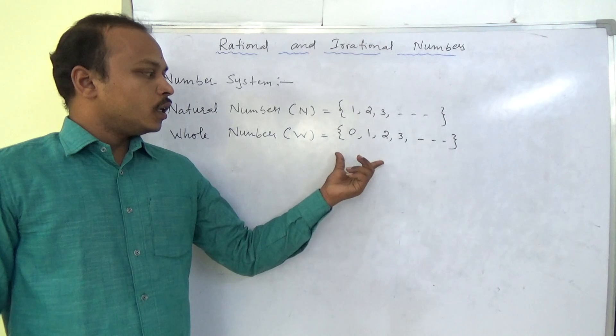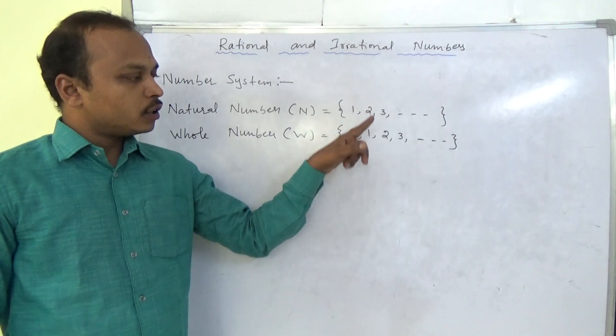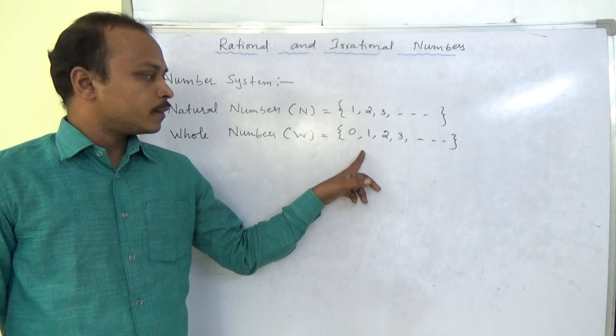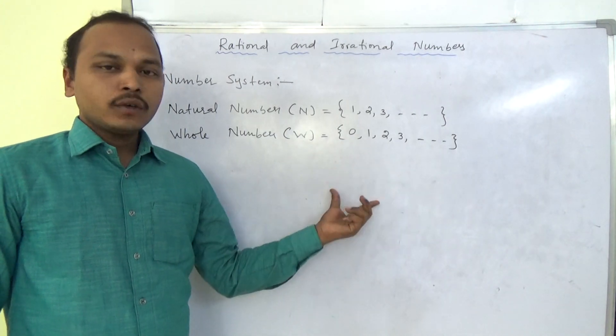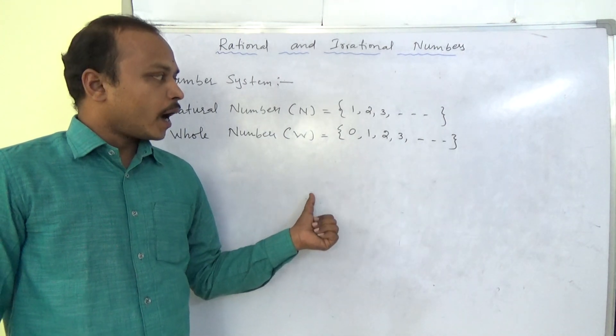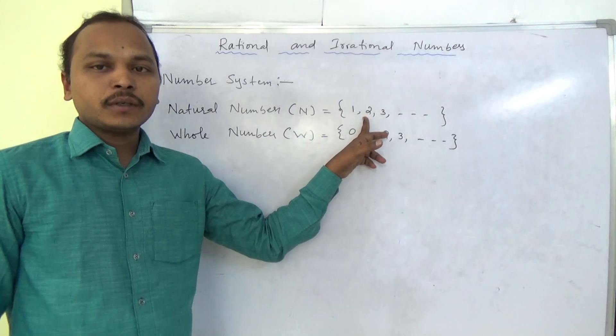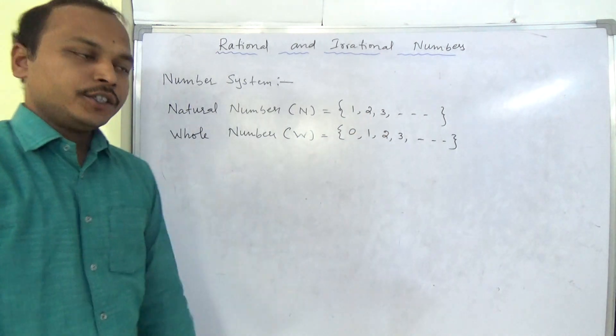Now, including whole numbers, all the natural numbers are in whole numbers. Next, including whole numbers, when we add negatives to natural numbers, that is integers.